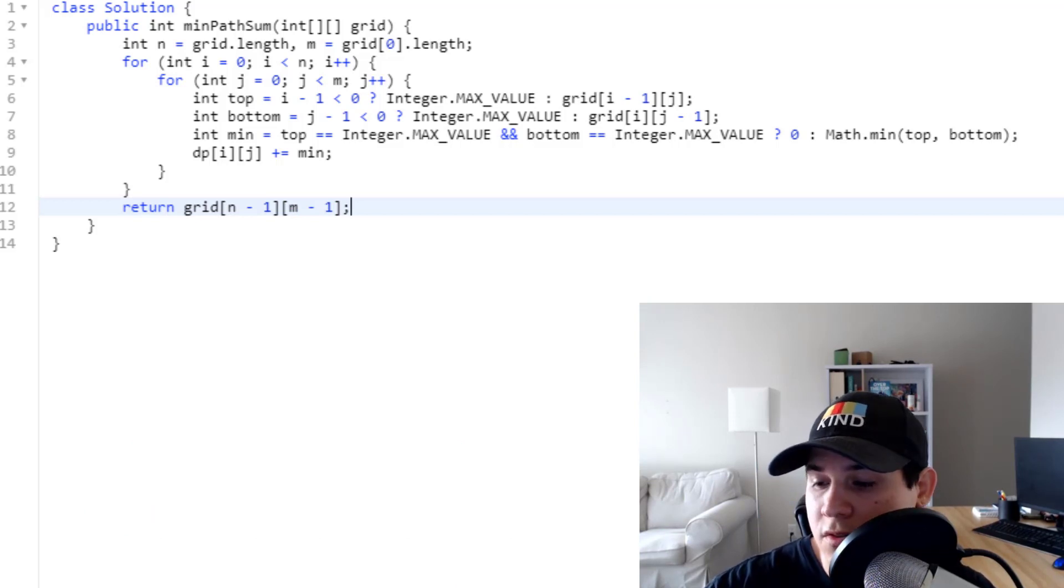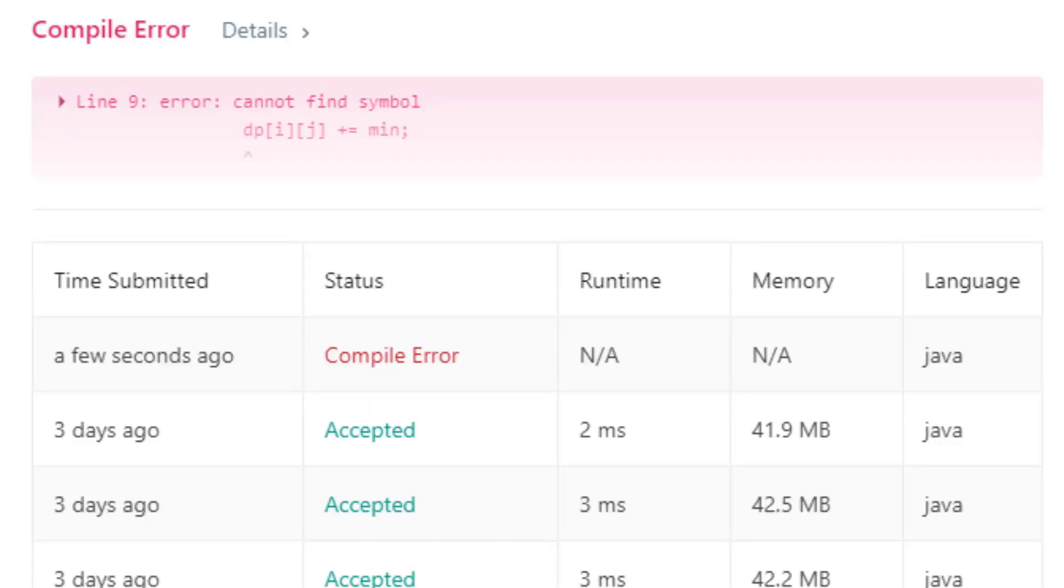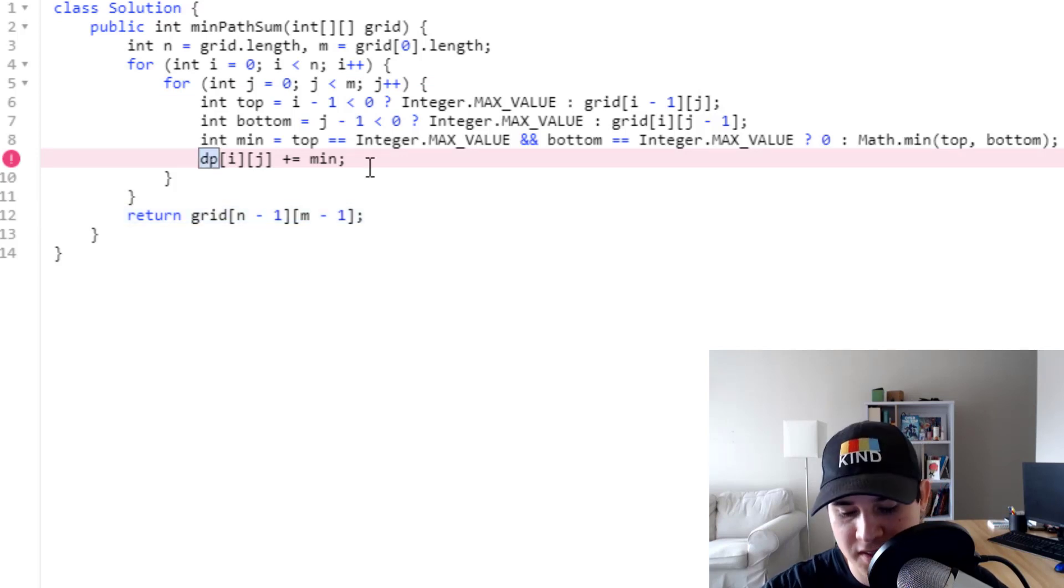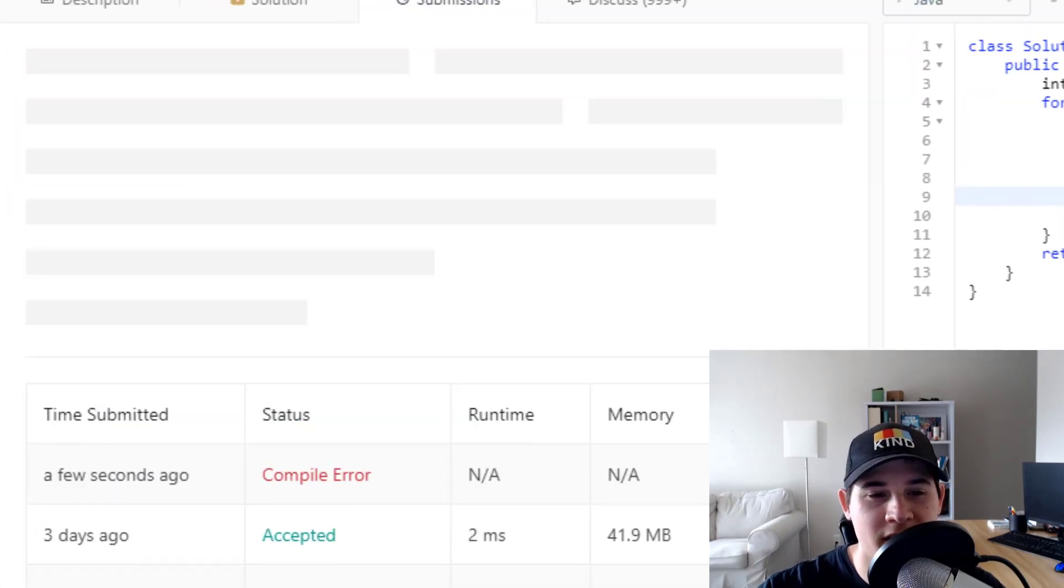So let's make sure this code works. Oh, I called it dp. This is supposed to be grid. So let's submit that again.